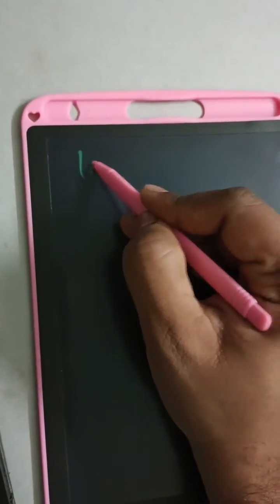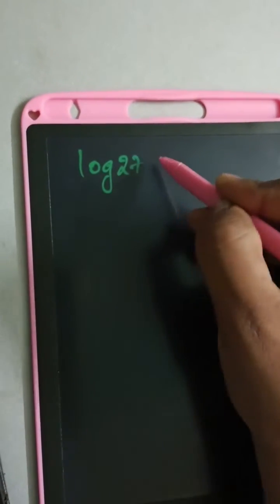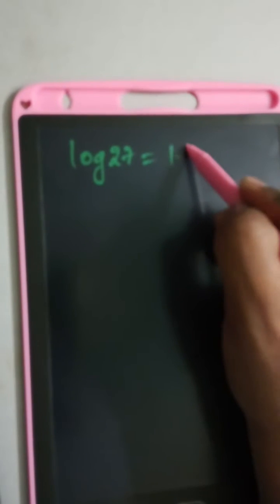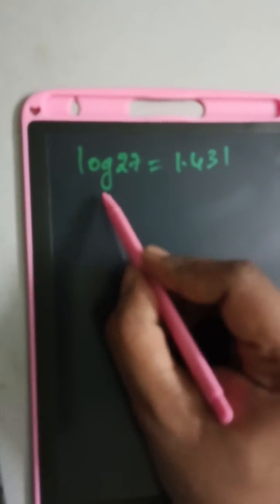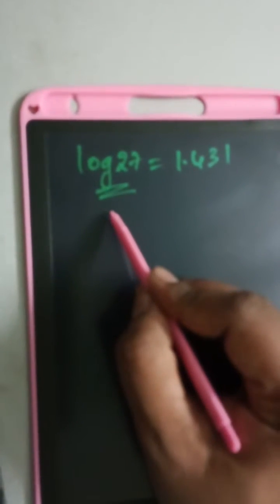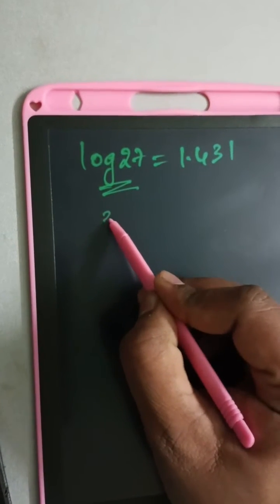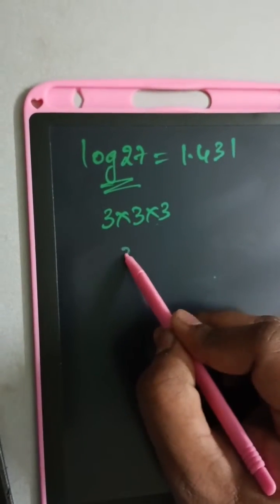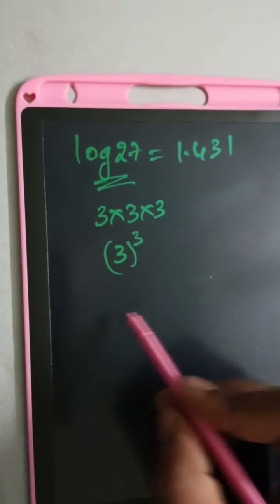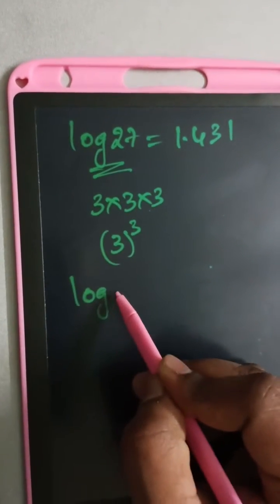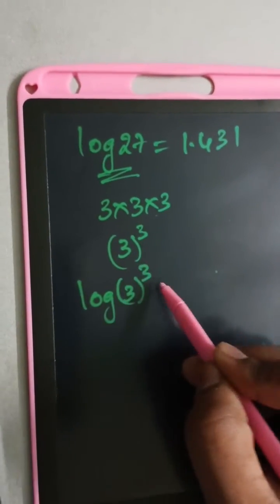In the question, log 27 value is provided as 1.431. Let's resolve log 27 first. Log 27 can be written as 3 into 3 into 3, so 3 to the power of 3. Therefore, log 3 whole cube is equal to 1.431.